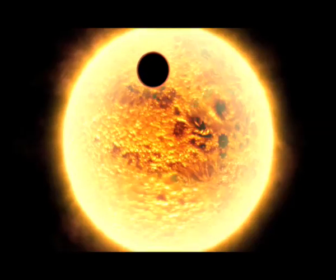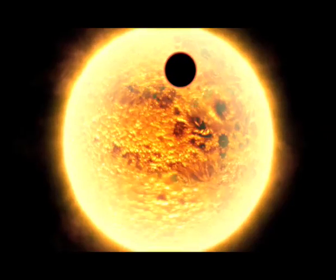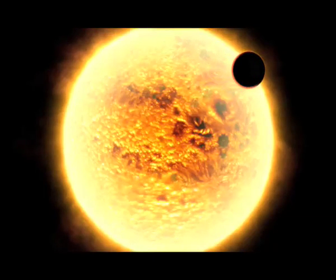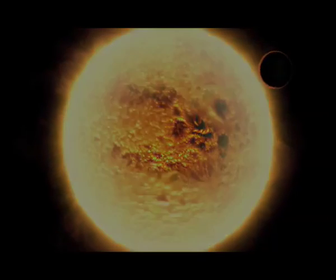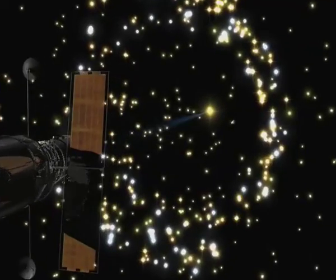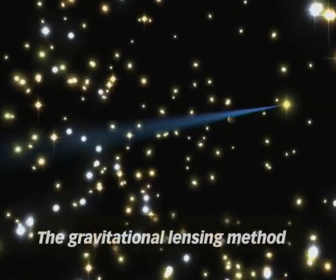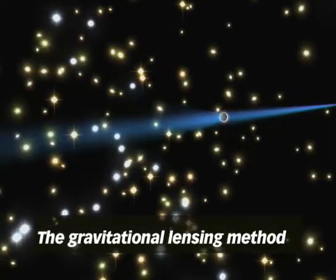When the passing light from a distant star is distorted by the gravity of a star and planet, telescopes can detect the distortion. This method has been used by the Hubble Space Telescope to spot suspected planets in globular clusters like M22, and is known as the gravitational lensing method of detection.